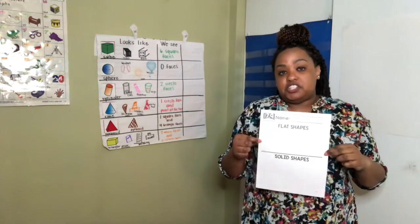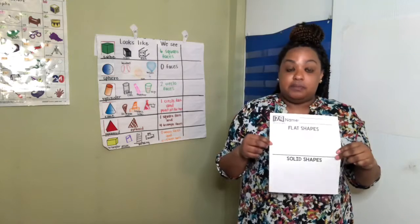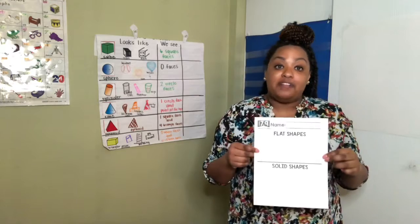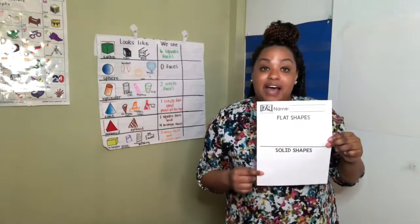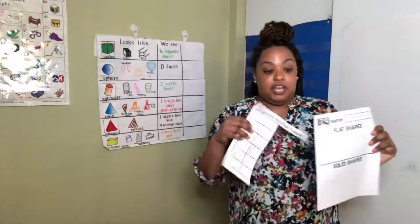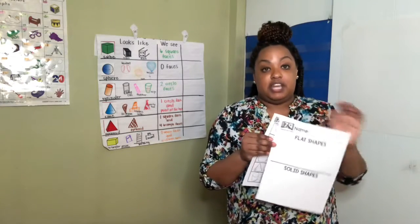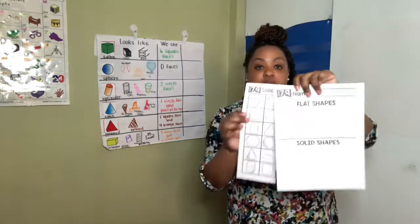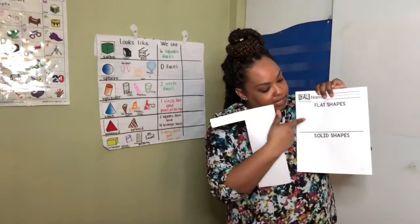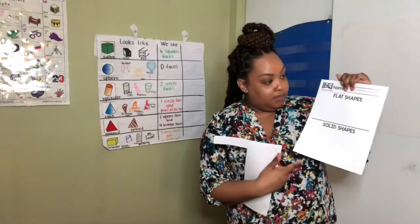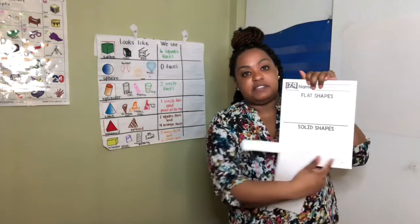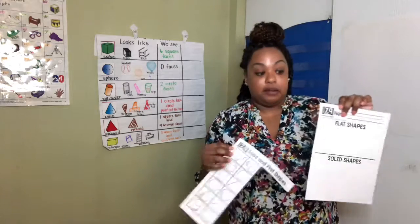Remember, flat shapes are what we call 2D shapes. Squares, circles, triangles. Those are what we call flat shapes. Now, at the bottom is where I want you to put the solid shapes. Solid shapes are our 3D shapes. So you will cut these out and paste them into the right space. If it's a flat shape, it goes at the top. If it's a solid shape, it goes at the bottom. When you finish, you can color.